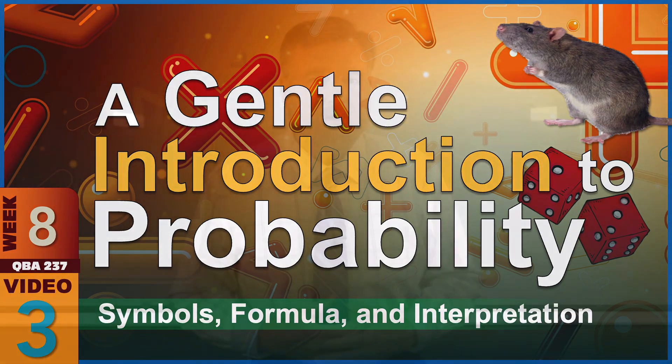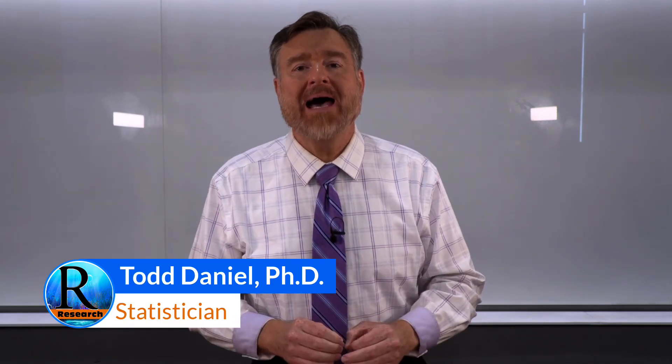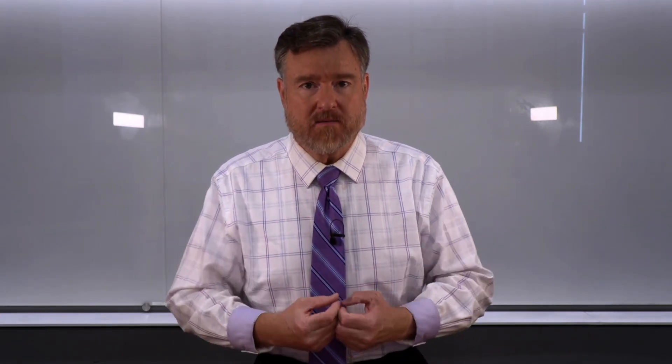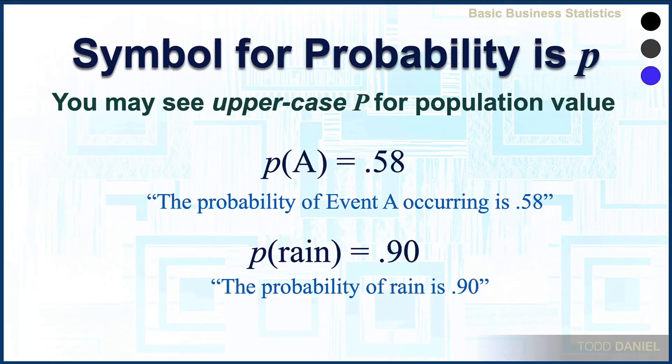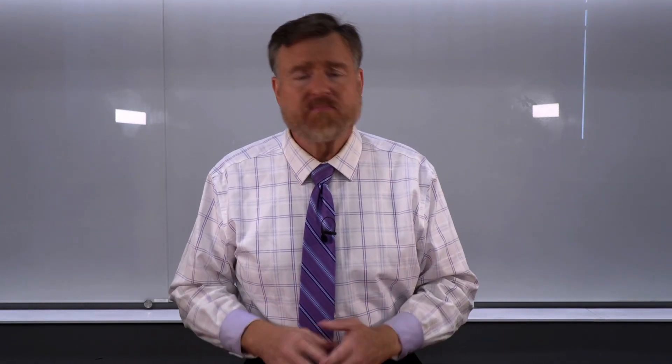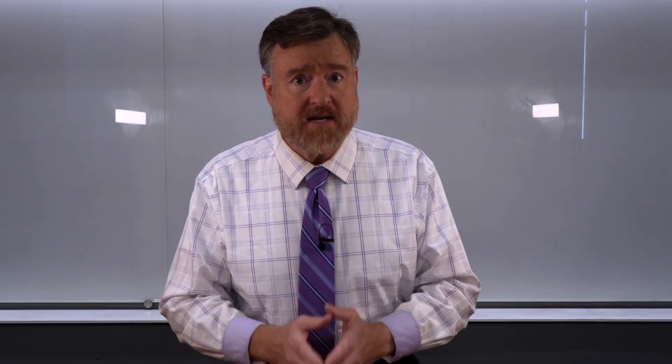We now know more about the grammar of probability — how to talk about probability. So next, let me offer a gentle introduction to the mathematics of probability. Let's start with what symbol we're going to use to represent probability. The symbol for probability is the lowercase p. I'm using samples here, so I'm going to use a lowercase p. If we were using population values, we would probably use an uppercase P. What matters for right now is that you understand that probability is represented by p.